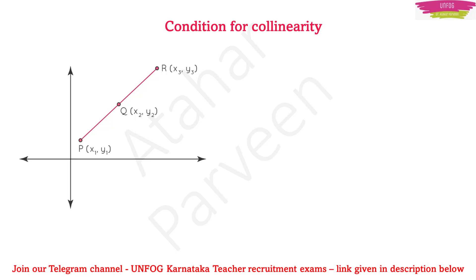Suppose you have three points P, Q, R and these three points are lying on the same line — then you say that those points are collinear. Not only three points; there can be many other points also. For example, if you have a line like this, there will be an infinite number of collinear points on this line. Suppose you have these three points P, Q, and R.